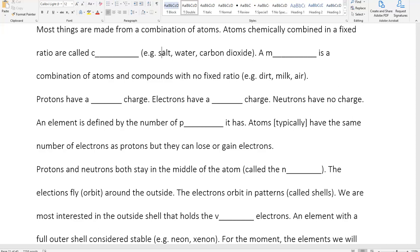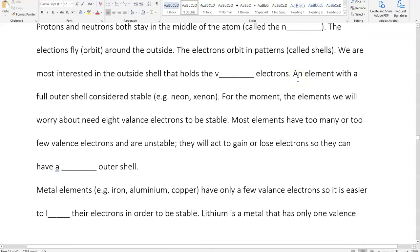An element is defined by its number of protons. So when I was referring to uranium as being 92, or plutonium as being 94, or hydrogen as being number one, that's based on how many protons it has. Atoms typically have the same number of protons as electrons, but they can gain or lose electrons. Protons and neutrons both stay in the middle of the atom, called the nucleus. The electrons orbit around the outside. The electrons orbit in patterns called shells. They also can be called orbitals.